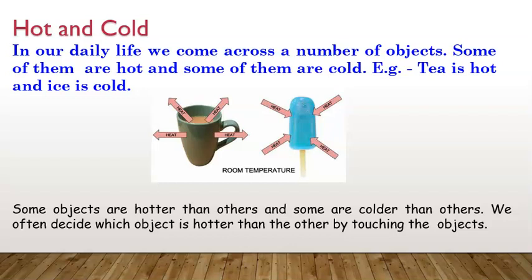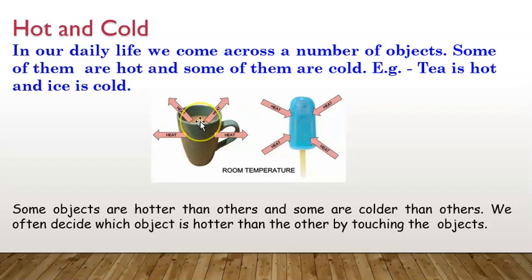Now, what is hot and cold? In our daily life we come across a number of objects — some of them are hot and some are cold. For example, tea is hot and ice is cold. See in the diagram: the temperature of the tea inside the cup is more as compared to the temperature outside, or the temperature of the surrounding. Since the temperature inside the cup of tea is more, heat will flow from the cup to the surrounding.